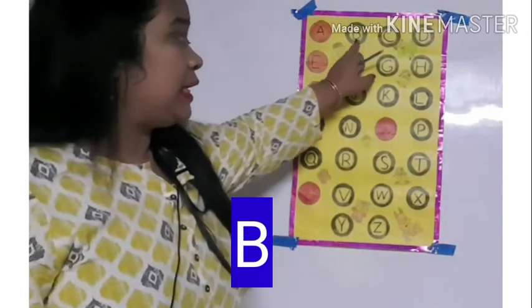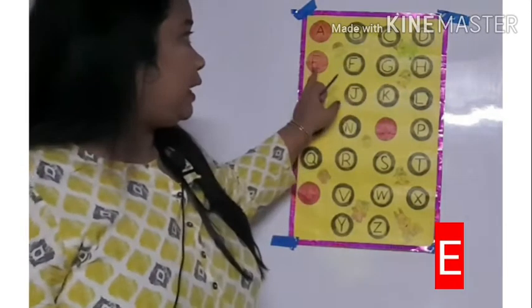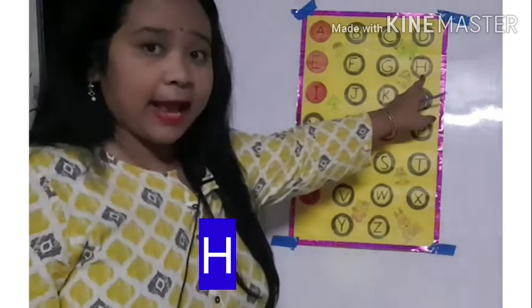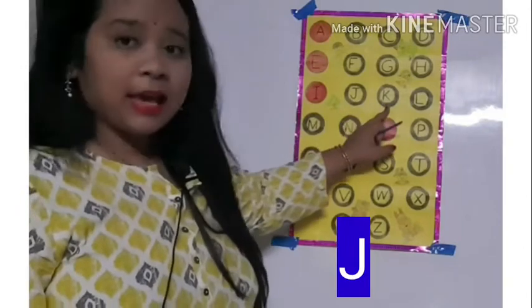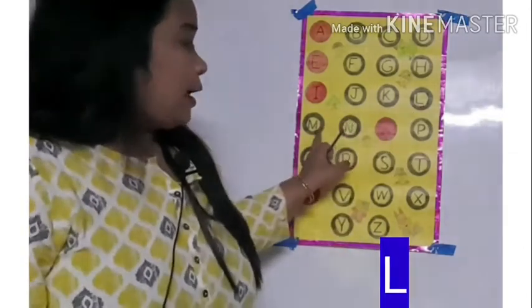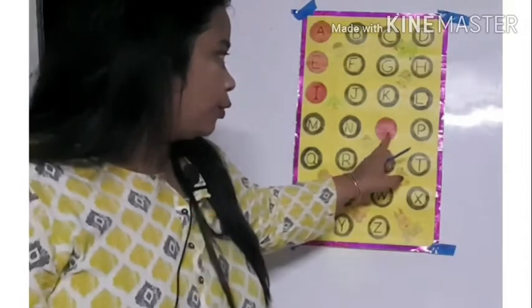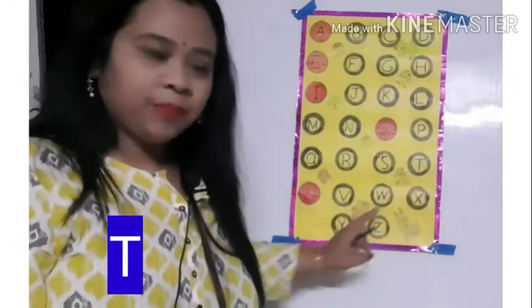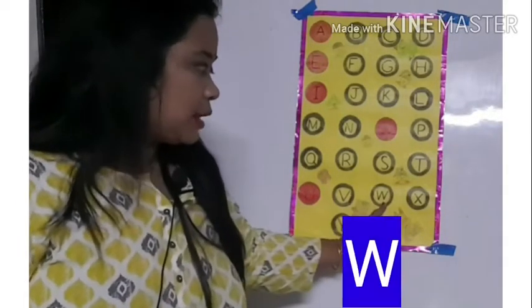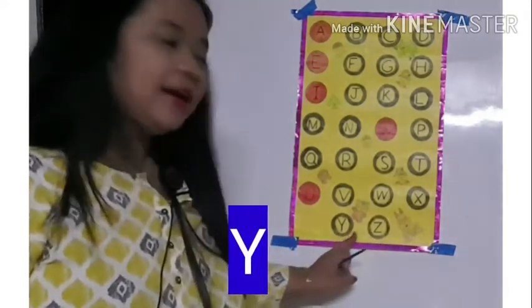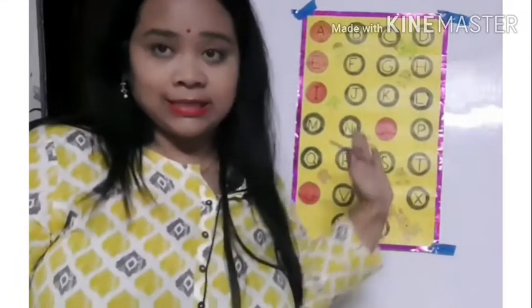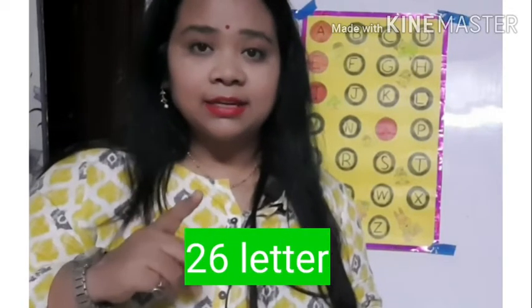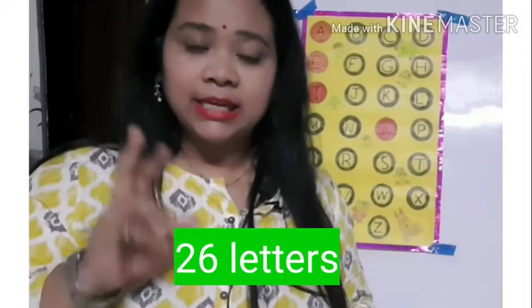Shall I read it for you once again? A, B, C, D, E, F, G, H, I, J, K, L, M, N, O, P, Q, R, S, T, U, V, W, X, Y, Z. So if you count all these letters, you will find that there are 26 letters — in total, 26 letters.